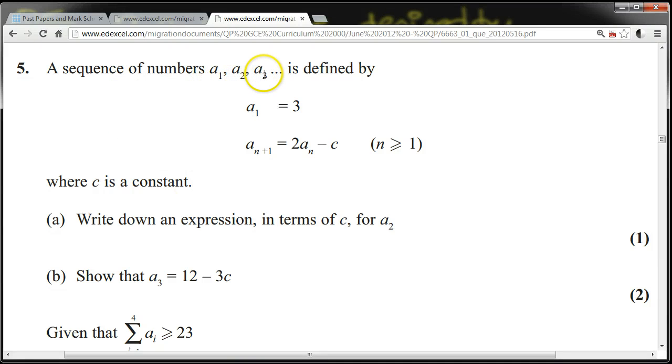A sequence of numbers a1, a2, a3, and so on, is defined by a1 equals 3, and a(n+1) equals 2a(n) minus c, for n greater than or equal to 1, where c is a constant.